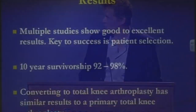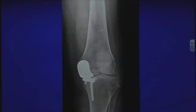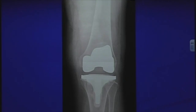The results of partial knees show good to excellent outcomes. The key to a good result is picking the right patient — one with isolated compartment involvement. If two or more compartments are involved, a total knee is needed. The 10-year survivorship — meaning implants still in place after 10 years — is 92 to 98 percent. Converting a partial knee to a total is like a patient undergoing a primary total knee. Here's a patient whose partial knee my father placed years ago that did well but whose plastic broke, so I converted it to a total knee.